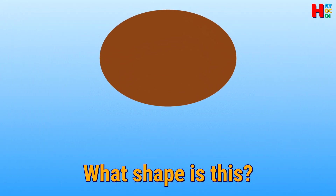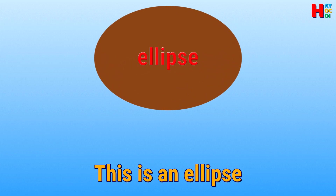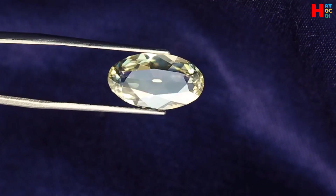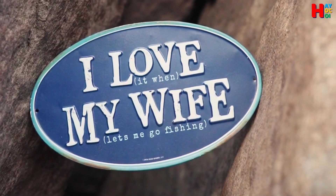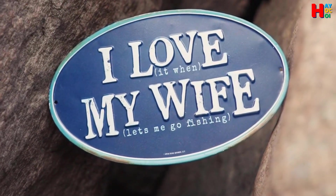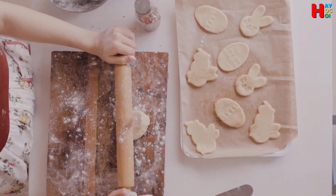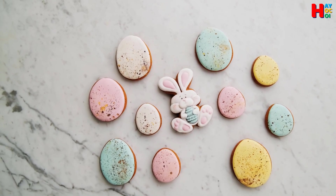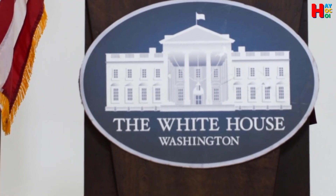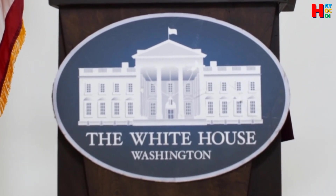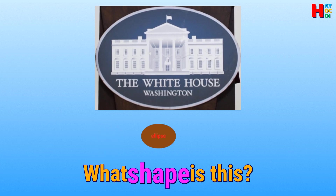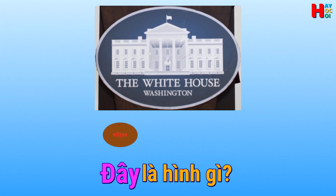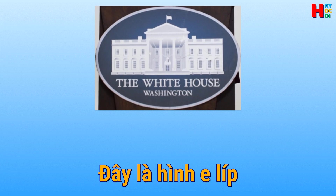What shape is this? This is an ellipse. This is an ellipse. What shape is this? This is an ellipse. Đây là hình gì? Đây là hình ellipse.